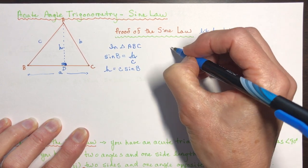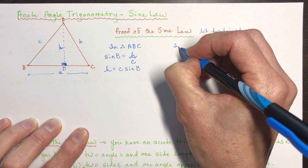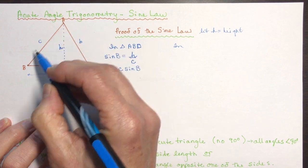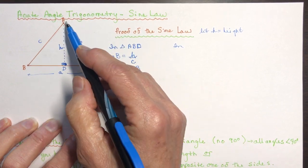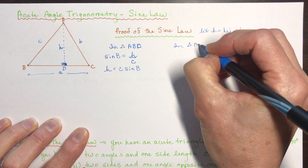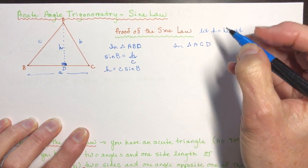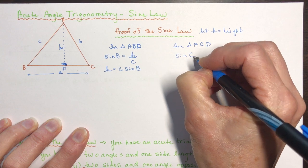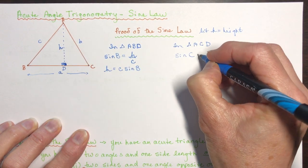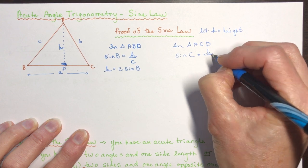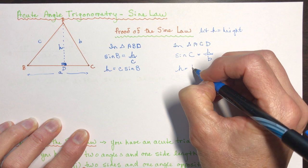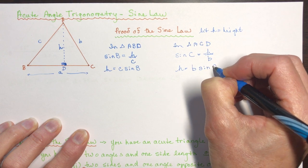Now let's go to the other triangle, ACD. The sine of C would be H over b. And that means that H is equal to b times the sine of C, so H = b·sin(C).